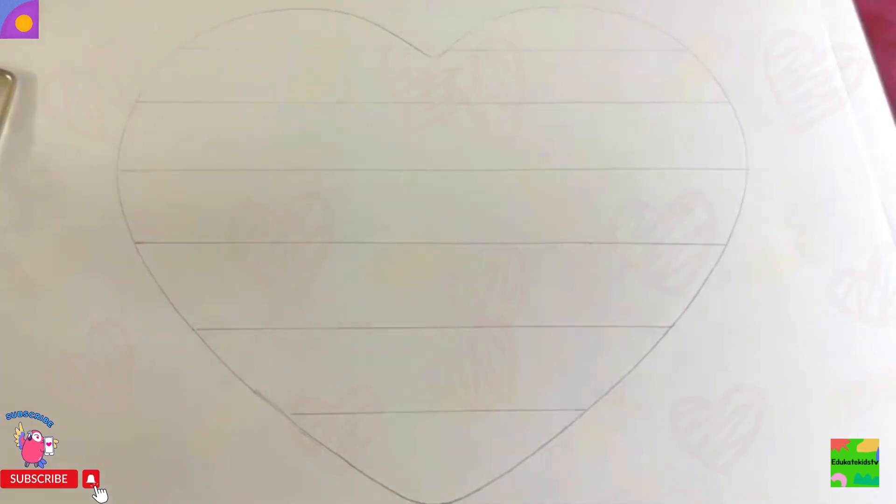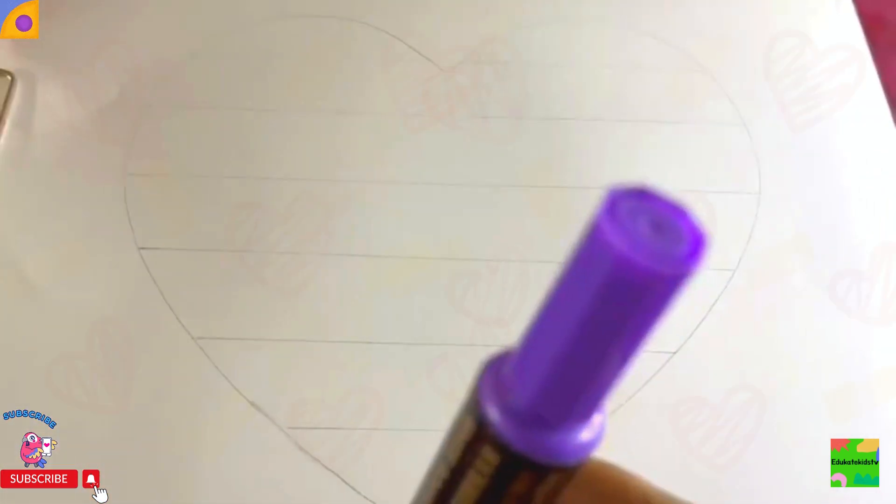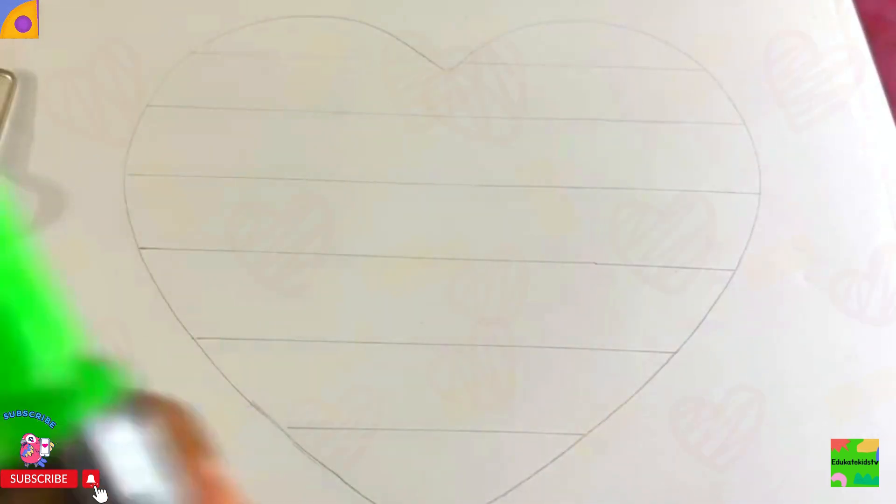Hello kids, how are you all? Good! Look here, what do we have? We have a big heart and we will draw little circles in it to make it a pop-it heart. Great! But first of all, let's learn some colors: pink color, yellow color, brown color, blue color, orange color, purple color, green color.